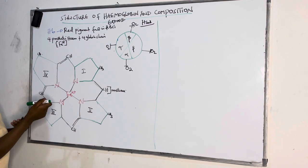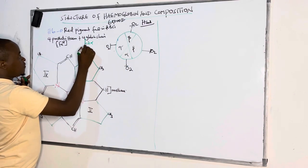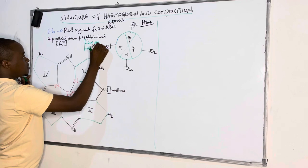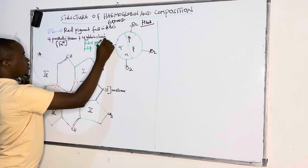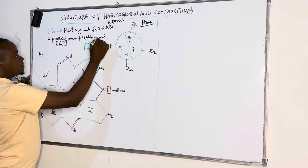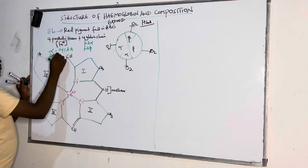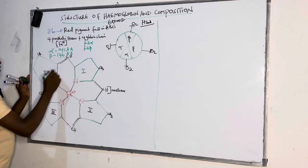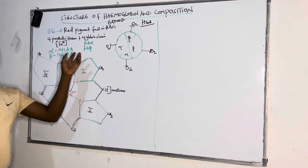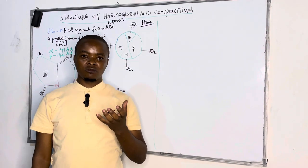For normal adult hemoglobin, the globin chains consist of two alpha and two beta chains. These are polypeptide chains, because they are composed of many amino acids. The alpha chain contains 141 amino acids, whereas the beta chain contains 146 amino acids. We shall also see later that a mutation in a single amino acid can result in what we call hemoglobinopathies.